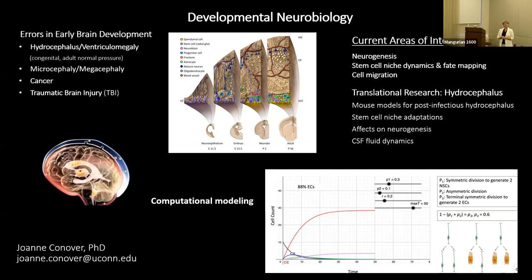Question: Can you grow the ependymal wall tissue in vitro — like organotypic cultures — to see if it develops the same way in vitro as in the brain over time? Answer: You can grow ependymal cells very nicely in culture. Growing the entire structure as an organotypic to see the same organization — that's something we've always wanted to do but haven't yet. You'd need the right setup. But as with organoids, there's a lot of self-assembly that surprises you, so it would be fun to see how that organizes.